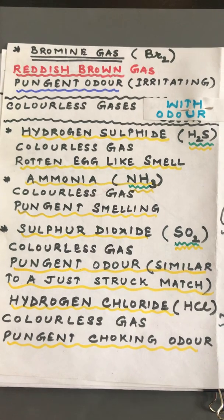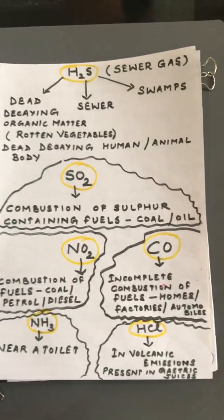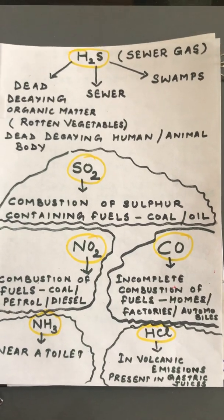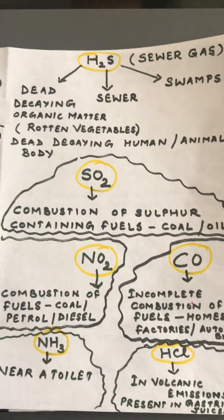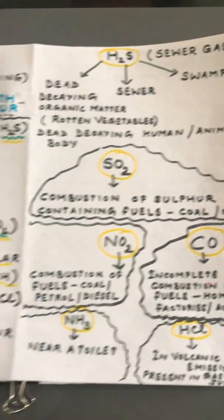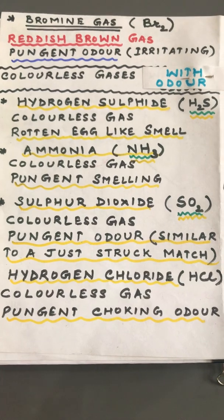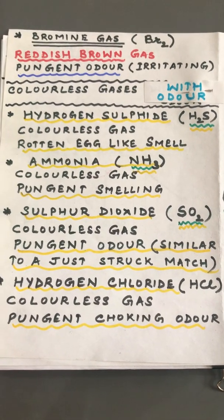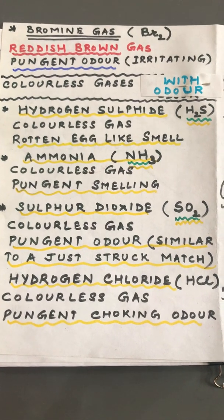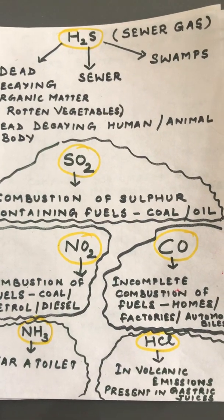Now let us discuss colorless gases with odor. Hydrogen sulfide H2S is a rotten-egg-like smelling gas — the kind of smell near swampy areas, also known as a sewer gas. It is produced from dead, decaying organic matter such as vegetable matter, dead human or animal bodies. Ammonia NH3 is another pungent smelling gas, produced near urinals because urine contains uric acid, a compound of ammonia. Sulfur dioxide SO2 is a pungent smelling gas — the kind of smell when you strike a matchstick. It is produced during combustion of sulfur-containing fuels like coal and oil.